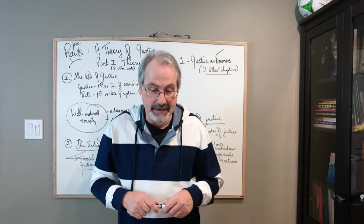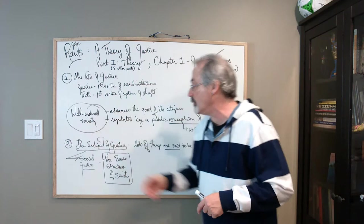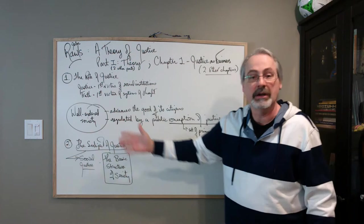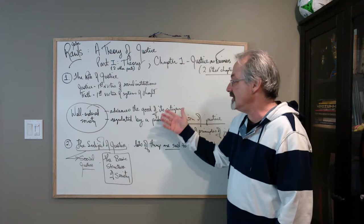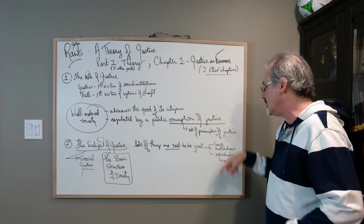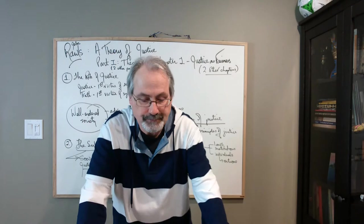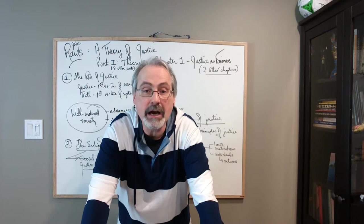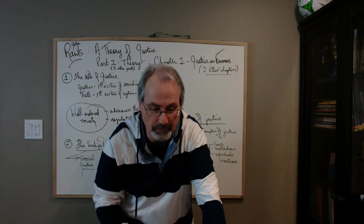So Rawls starts by looking at the concept of a society and a well ordered society, which advances the good. He doesn't really think that any society is perfectly well ordered. So he's starting with an ideal model. So a well ordered society advances the good of its citizens and it is regulated by a public conception of justice. That's its first virtue. And what's this public conception of justice? Well, it's a set of principles of justice. And so our personal interests can sometimes lead us to conflict and our shared notion of justice can lead us to cooperate.